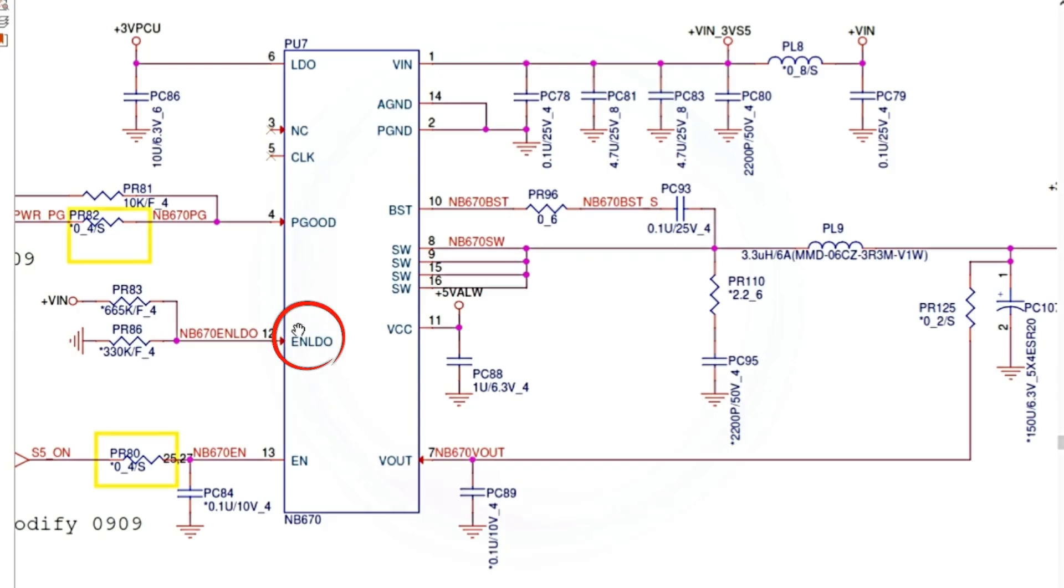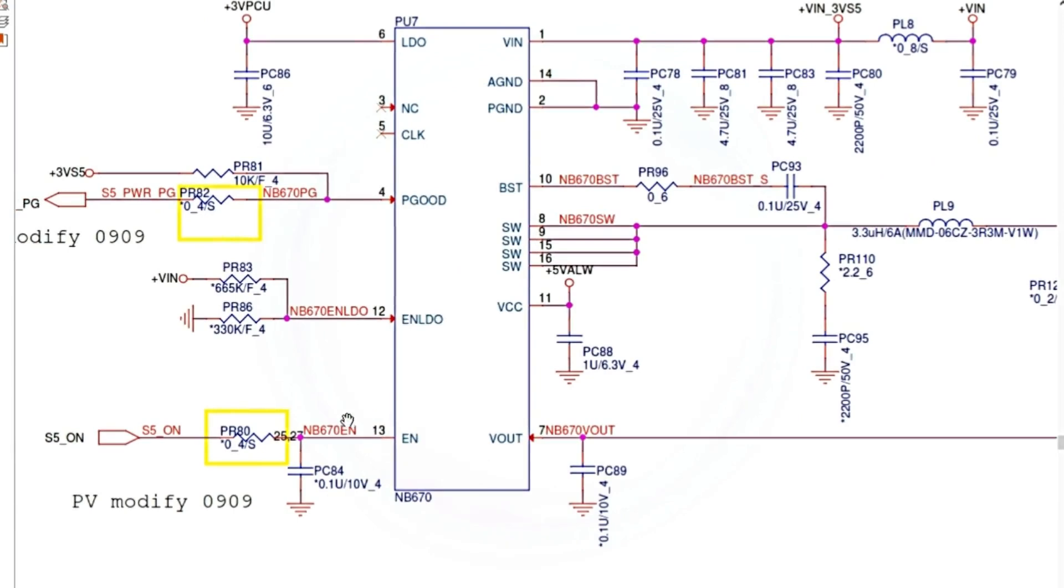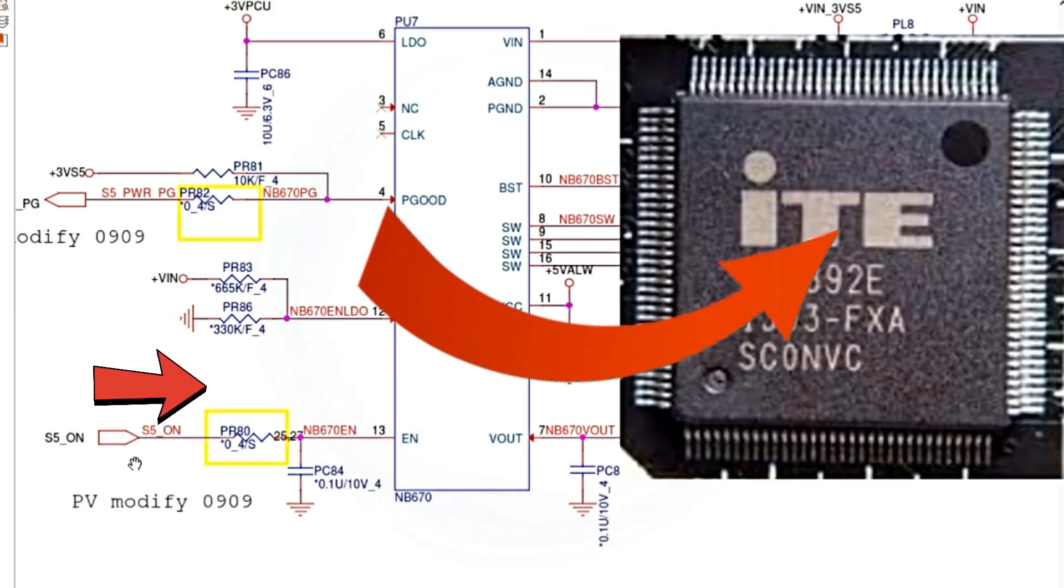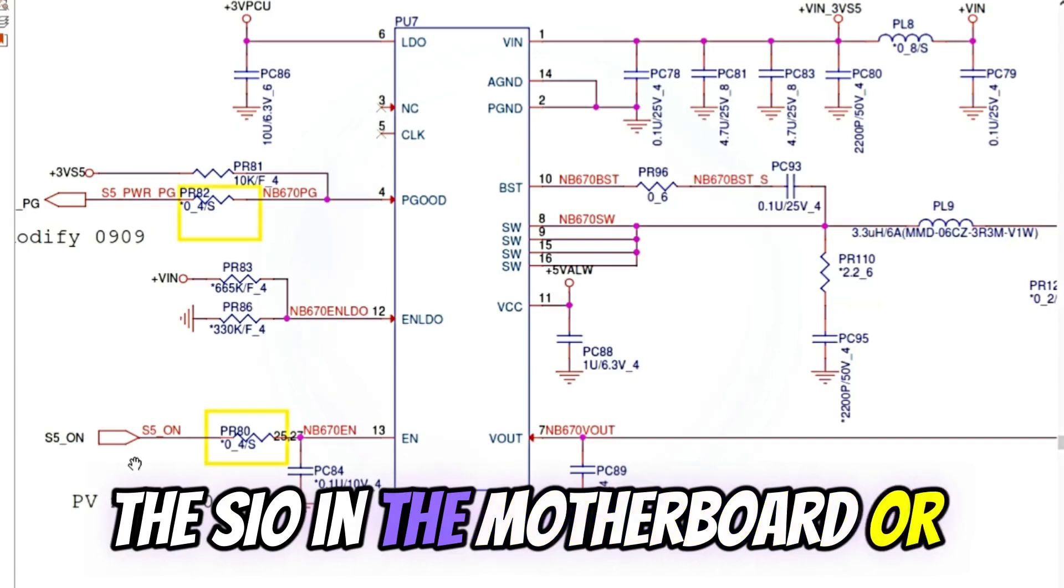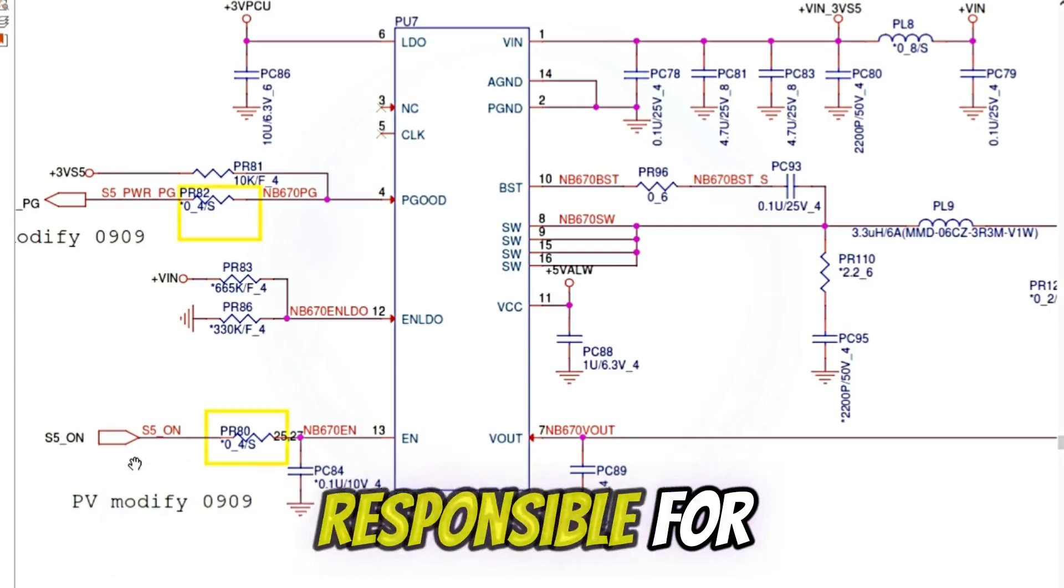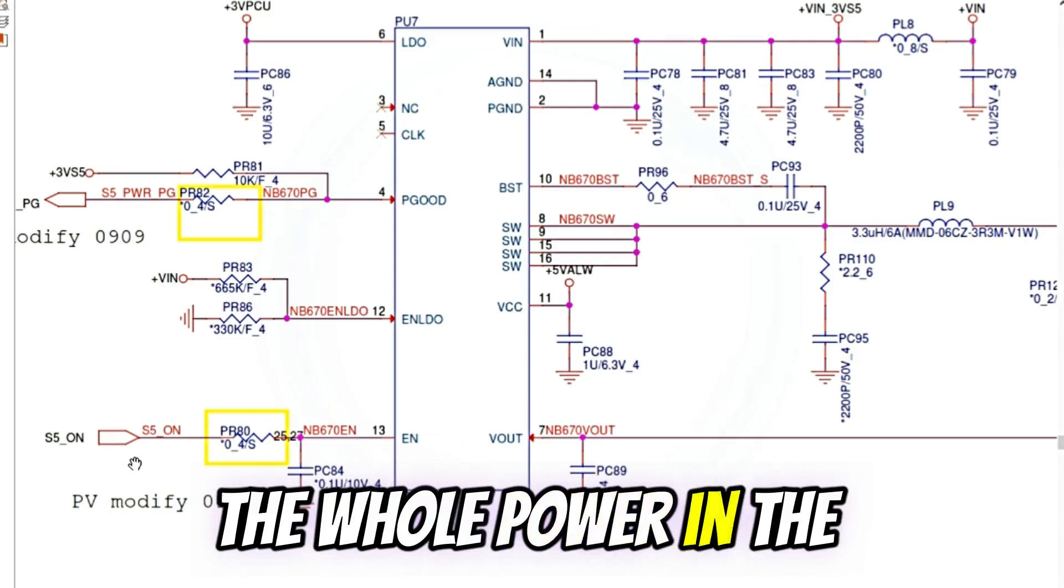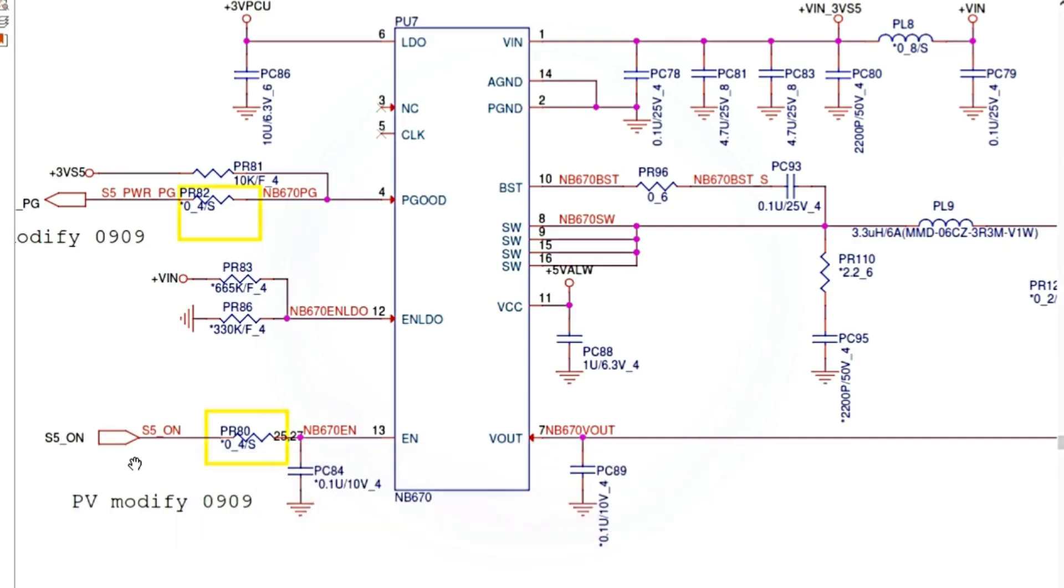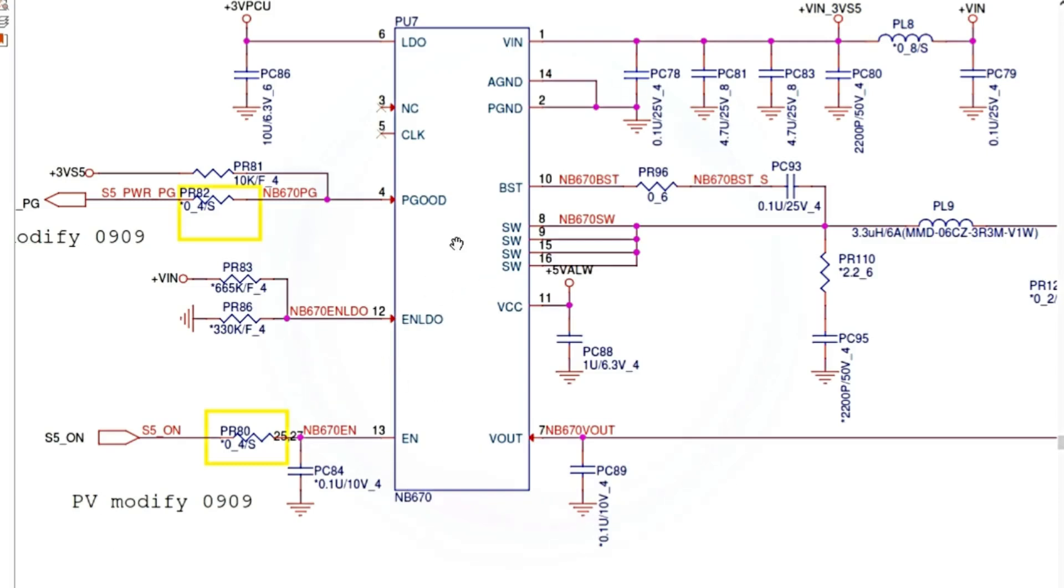And here we have enabled LDO. This is enabled signal. This and this are enabled signals. Basically, these signals, as you can see, are coming from the SIO or the super input output. Because the SIO in the motherboard, or the super IO, is the IC, the first responsible for the whole power in the motherboard. So the SIO controls all control ICs in the motherboard. Always enable signals comes from the super IO.